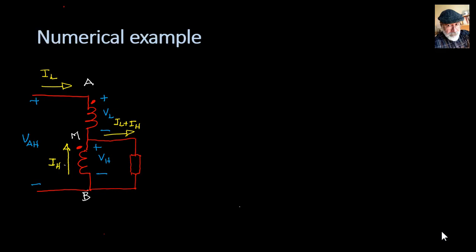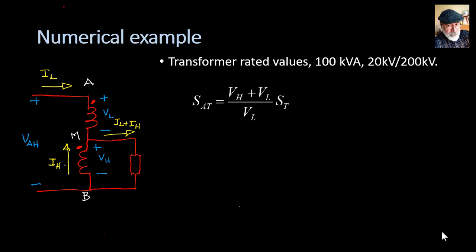We engineers like our numbers, so let's run a numerical example. Let's take a single phase transformer rated for 100 kVA, 20 kV on the lower side, 200 kV on the higher side. If we just set up an auto transformer with that single phase two winding transformer, we compute that even though we could feed only 100 kVA of load with a single phase transformer, with the auto transformer built with the same single phase transformer, we can feed 1.1 mega volt amperes, that is 1100 kVA, 11 times more power. Isn't that amazing?